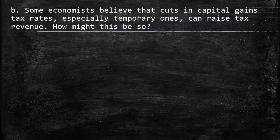The B part says: some economists believe that cuts in capital gains tax rates, especially temporary ones, can raise tax revenue. How might this be so?